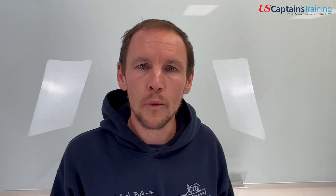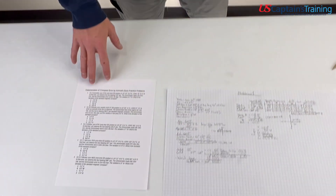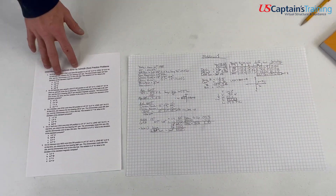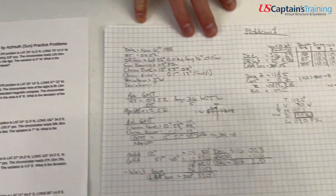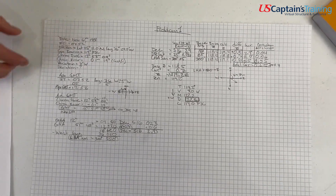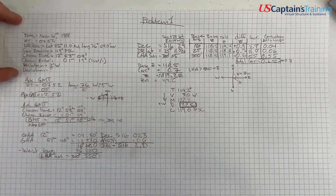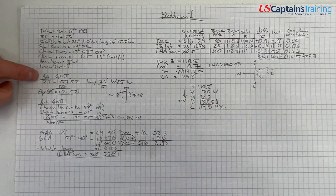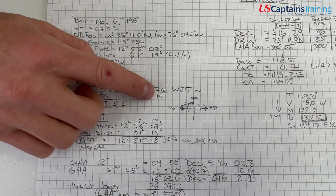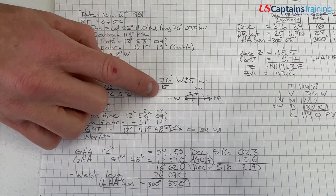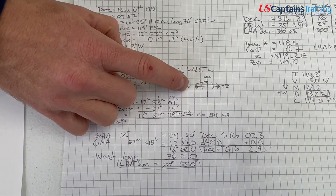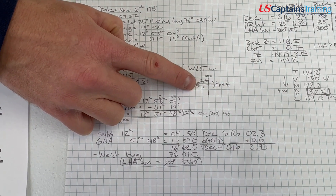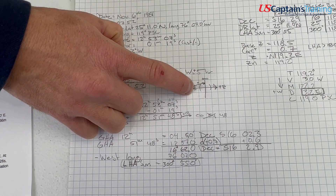Let's take a closer look at some of the concepts within practice problem one — the determination of compass error by azimuth. Here's the solution we worked through in a video. There are a couple of concepts to examine. Here are all the givens, pretty straightforward. When we found the approximate GMT, we divided the longitude by 15 to get the time zone correction — but why does this work?